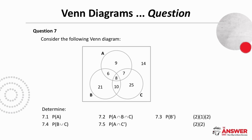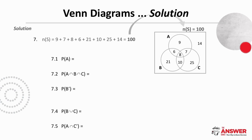For question 7 we are given a Venn diagram and asked to determine certain probabilities. Before we get started we need to calculate the total number of elements in the sample space by summing all elements in the Venn diagram, and we can see the total is 100.